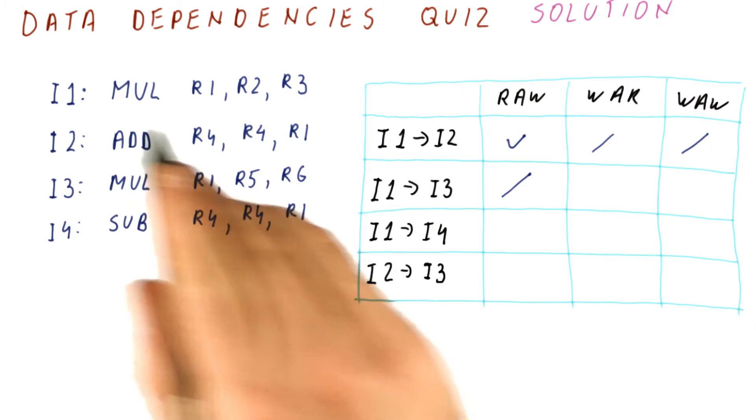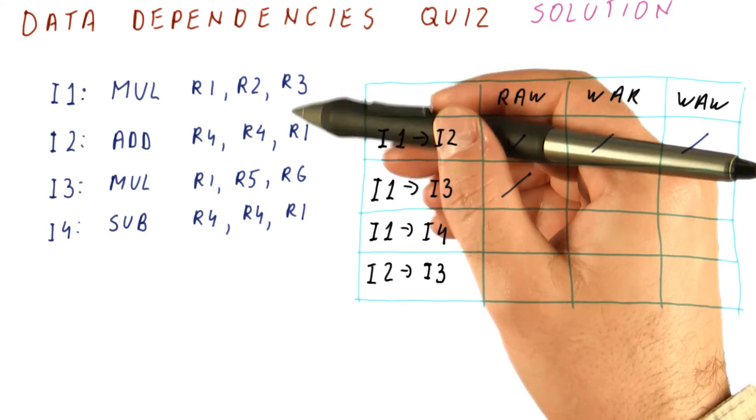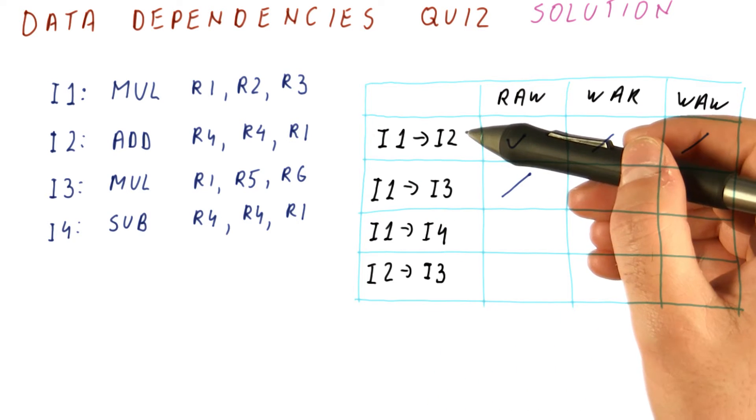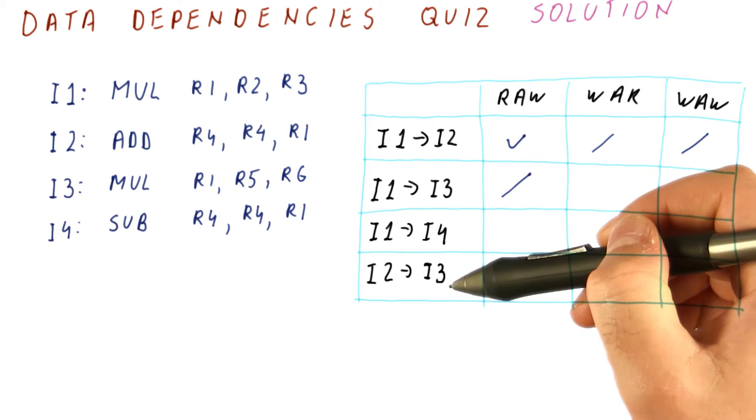Okay, let's look at the solution for our data dependencies quiz. We have these four instructions, and for each type of dependence, we need to figure out whether these pairs of instructions have these dependencies.